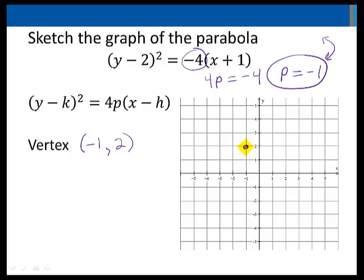The next thing I'll look for is the focus. Well, the focus with a p value of -1 and the parabola opening to the left, I will go one unit to the left of my vertex to find the focus. So the focus will be the point (-2, 2). We know that the directrix is the line one unit to the right of the vertex. So here the directrix will be the y-axis, or we'll call it the line x = 0.